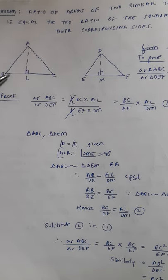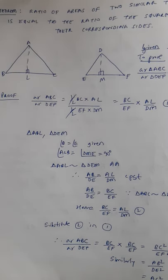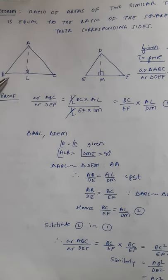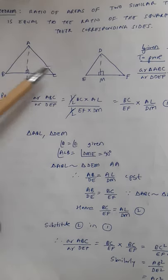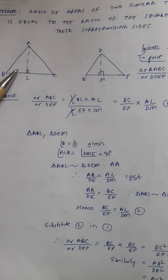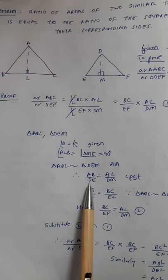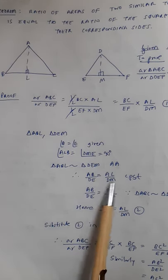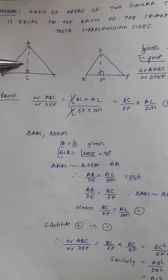We are going to take the two small triangles ABL and DEM and prove them similar. We can prove this by double-A: angle B and angle E are equal because the bigger triangles ABC and DEF are given similar, so corresponding angles are equal. By construction, angle L and angle M are both 90 degrees. So triangle ABL is similar to triangle DEM by AA. Once the triangles are proved similar, we can say AB upon DE equals AL by DM, because if triangles are similar, their sides are in proportion.